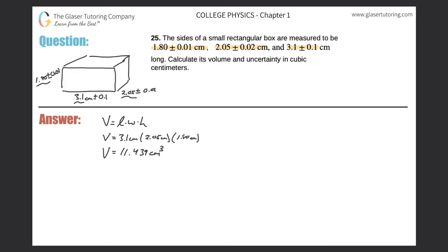Now we account for significant figures. The value 3.1 has two sig figs, so our answer can only have two sig figs. The volume is approximately 11 centimeters cubed. Now we have to calculate the uncertainty. To find the total uncertainty, we need to work in percentage terms — first find the total percent uncertainty, then use that to find the actual value of the uncertainty.